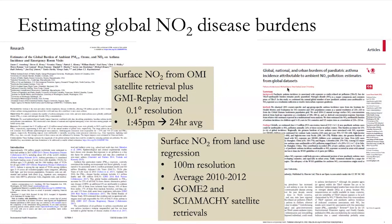We followed up with a more refined analysis using a land use regression model with 100-meter resolution, which used satellite retrievals from GOME-2 and SCIAMACHY as part of the input. The product of applying that land use regression model to estimate the global burden of NO2 on pediatric asthma incidence was published in Lancet Planetary Health in 2019, authored by my postdoc Ploy Achakulwisut and colleagues. I'll now show some sample results to give a sense of the magnitude of findings.